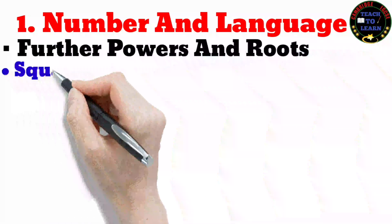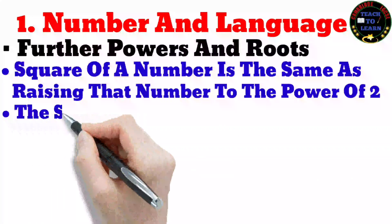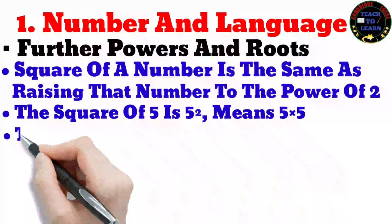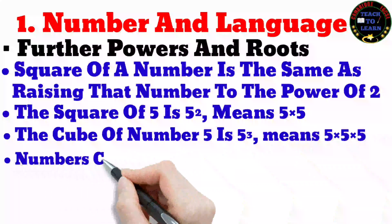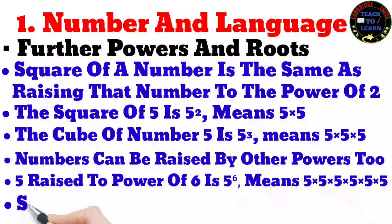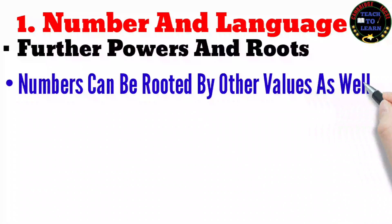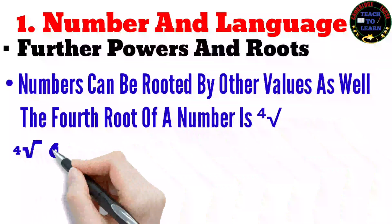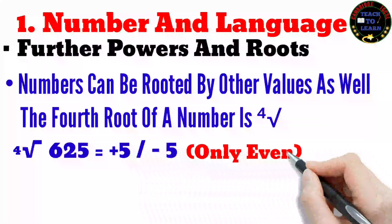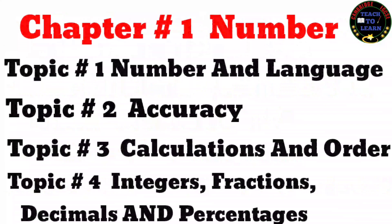Further powers and roots: the square of a number is the same as raising that number to the power of 2. For example, the square of 5 is written as 5². Similarly, the cube of a number is the same as raising that number to the power of 3 — the cube of 5 is written as 5³, which means 5 × 5 × 5. Numbers can be raised to other powers too; for example, 5⁶ means 5 multiplied by itself six times.